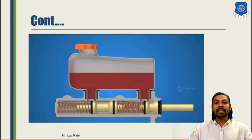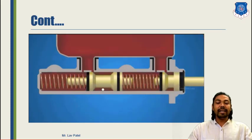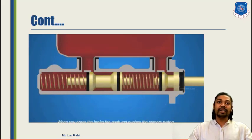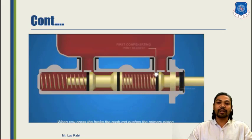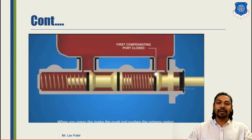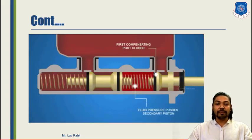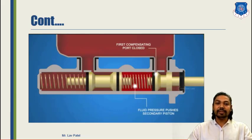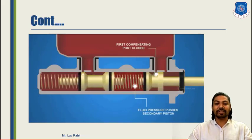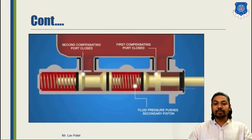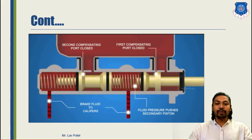There are also secondary ports, retaining spring, and piston seal in the arrangement. Two springs are attached, with one outlet going to the front wheels and another outlet going to the rear wheels. While applying brakes, the first compensating port is going to close and pressure builds up, and that fluid pressure pushes the second piston. The red portion shows the maximum pressure; at the second compensating port it closes after the first, and again the fluid is pressurized and that brake fluid goes to the calipers.